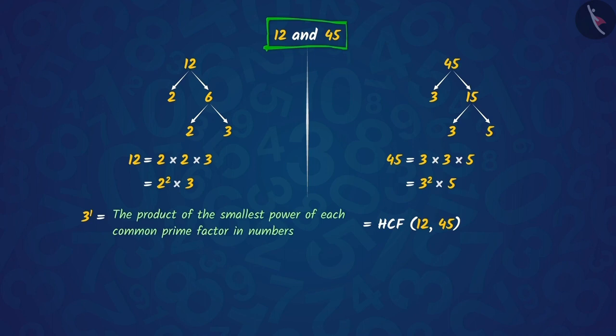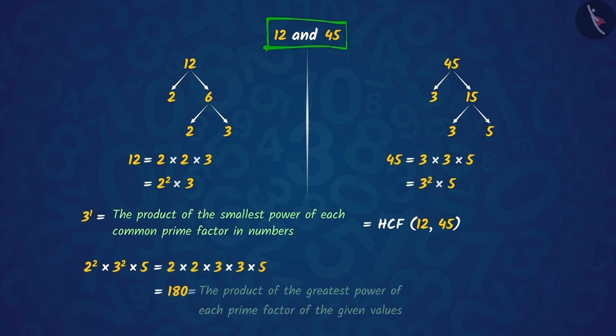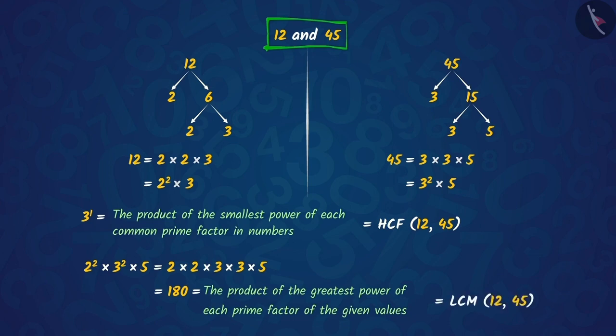Also, if we observe carefully, like HCF, we can also find the least common multiple, LCM, which is the product of the highest powers of the prime factors of both the numbers. That is, the LCM of 12 and 45 is 180.